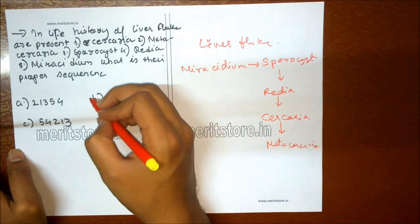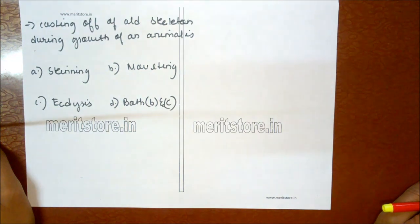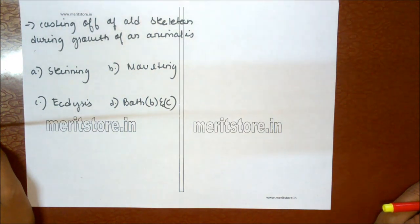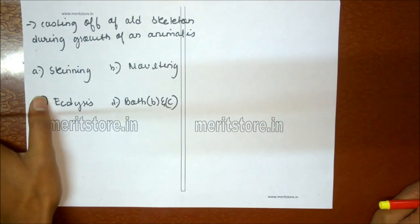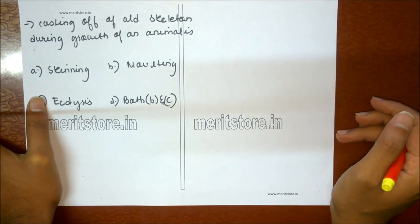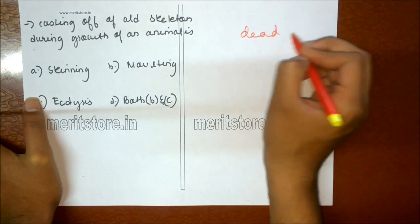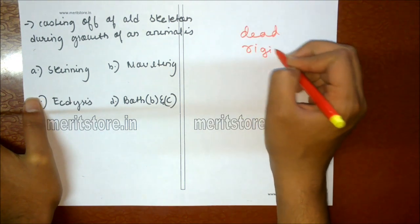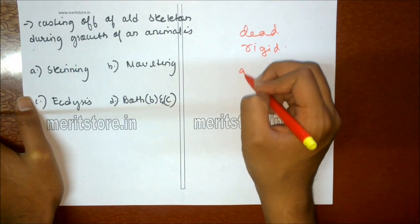Casting off of old skeleton during growth of an animal is: A skinning, B molting, C ecdysis, D both B and C. Ecdysis or molting is the process of casting off the dead, rigid outer covering of the animal body during its growth. A new loose covering is formed below to accommodate growth. So option D is the correct answer.